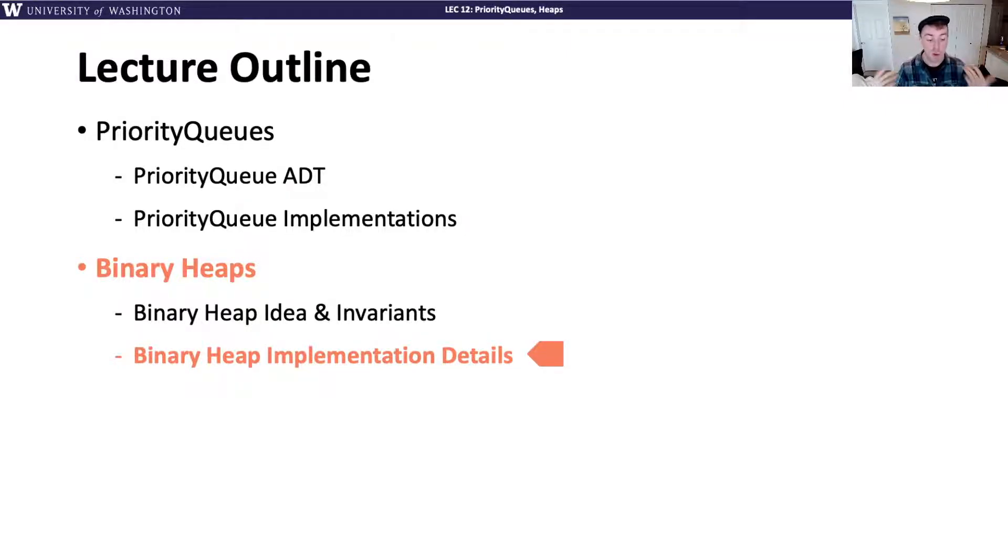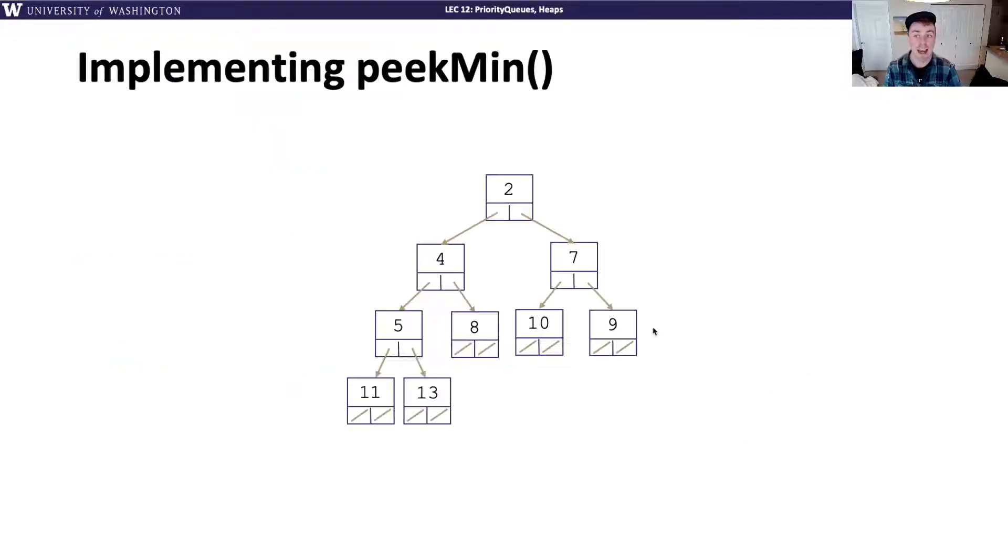So far we have talked about what is the idea of the priority queue ADT, then we introduce these new set of invariants for binary trees, the heap invariants, that can lead us to a binary heap. Now in our last video we're going to tie these two together. We're going to describe how can I use a binary heap to implement the operations of the priority queue ADT.